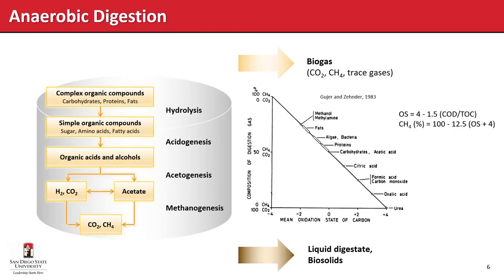Anaerobic digestion itself involves multiple processes. First is hydrolysis, where complex organic compounds like carbohydrates, proteins, and fats are converted into simple organic compounds — sugars, amino acids, and fatty acids — in an extracellular process. Following that is acidogenesis, where simple organic compounds are converted to organic acids and alcohols. Then acetogenesis produces hydrogen, CO2, and acetate from those organic acids and alcohols. Finally, methanogenesis converts acetate into CO2 and methane, and hydrogen and CO2 are utilized to produce additional methane.